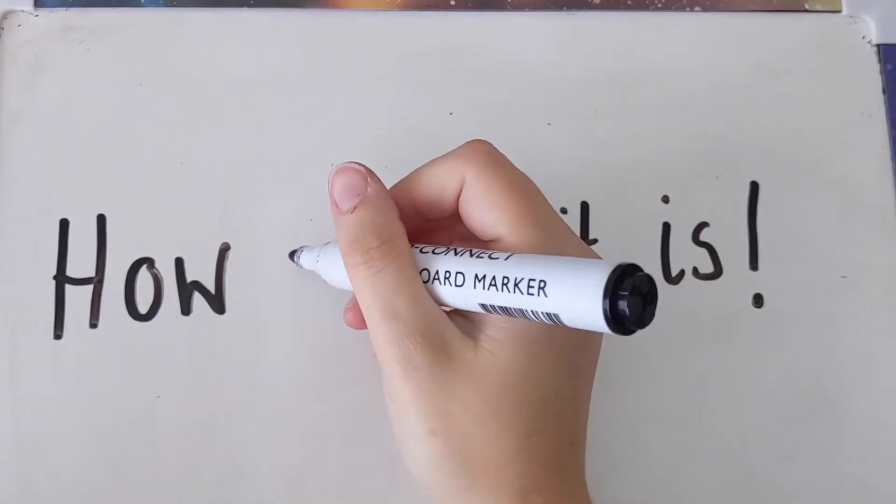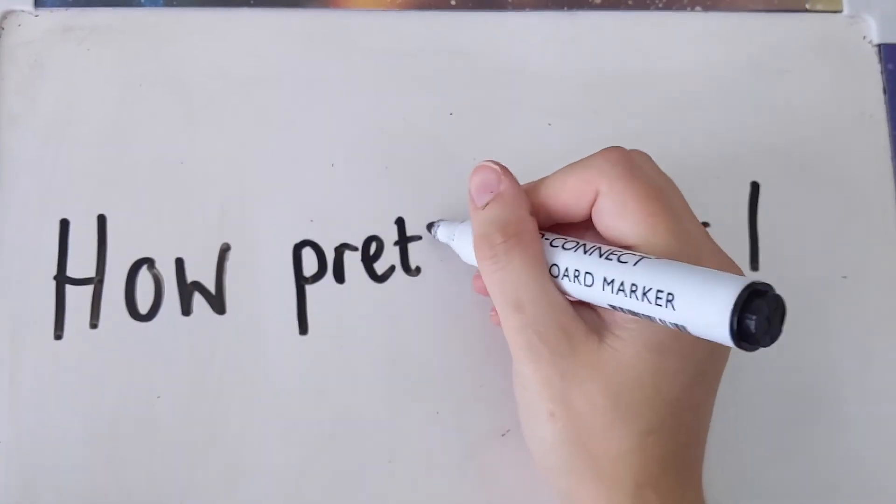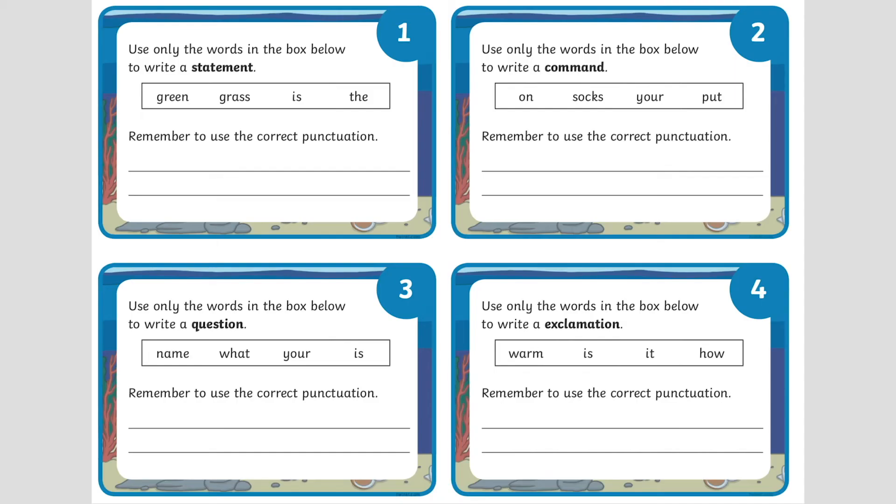And this exclamation sentence keeps its structure, but we can change the adjective that we are using. Using this resource is a great way for children to practice writing sentences, identifying sentence types, and also understanding how words fit together in sentences to make sense.